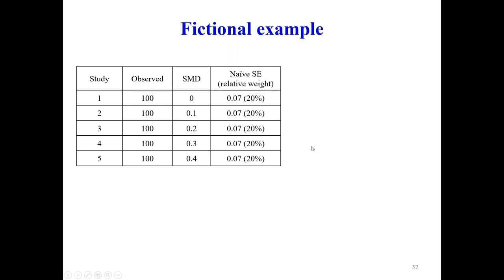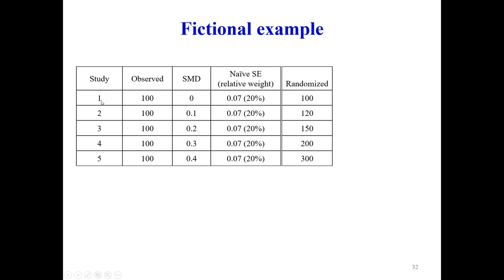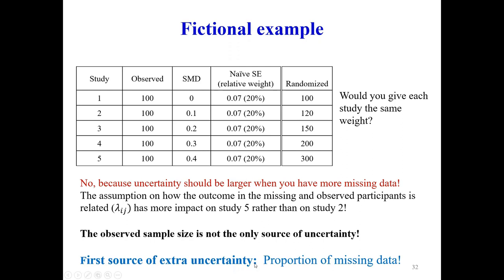Going back to the fictional example: most respondents said we should give more weight to the study that randomized 100 participants and obtained data for all of them. This is correct because the proportion of missing data is another source of uncertainty beyond observed sample size. The more missing data we have, the more uncertainty we want for that estimate.